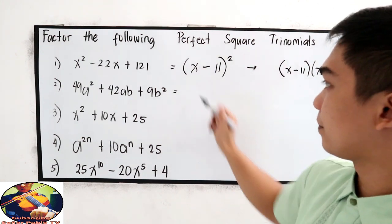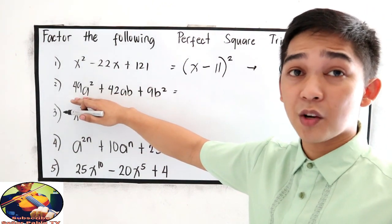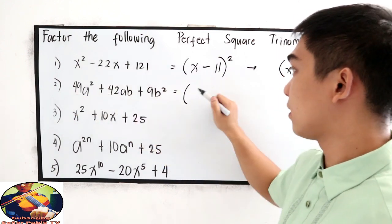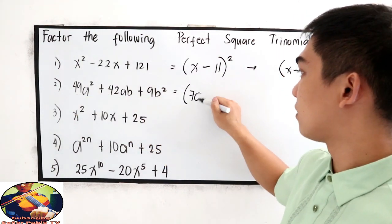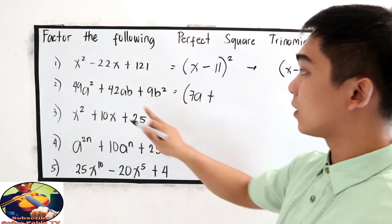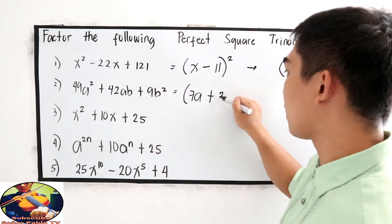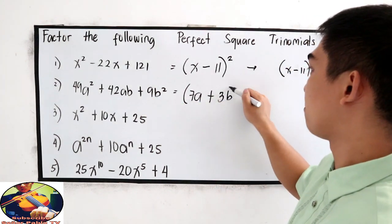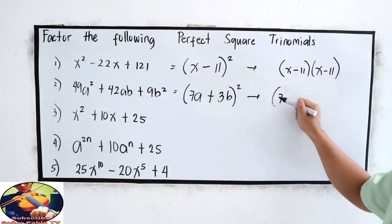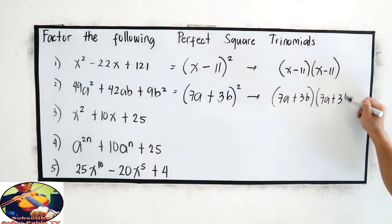Number 2, we know that this is a perfect square trinomial. So square root of 49, that is 7, then a. Sign of the middle term, positive. Square root of 9, that is 3. Square root of b squared, that is b. Now it can be written as 7a plus 3b times 7a plus 3b.